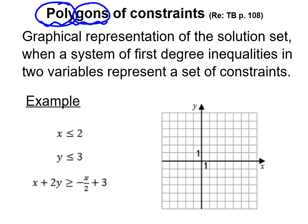We're going to use a system — a system is more than one. First-degree means that we're going to have x and y with exponent 1. Last year you worked with second-degree, with x-squared, and in Secondary 3 you started with first-degree equations or inequalities.